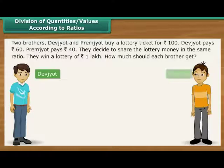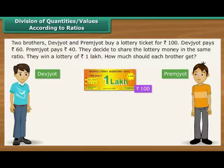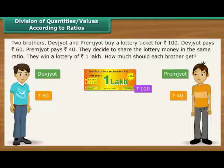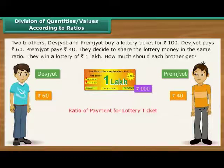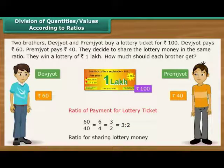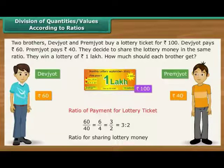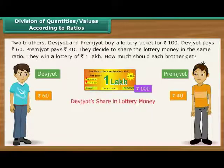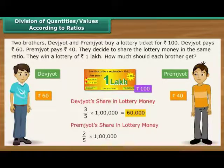Two brothers, Devjodh and Premjodh, buy a lottery ticket for Rs. 100. Devjodh pays Rs. 60 and Premjodh pays Rs. 40. They decide to share the lottery money in the same ratio. They win a lottery of Rs. 1 lakh. The ratio of their payments is 3 is to 2. It means that out of every Rs. 5, Rs. 3 will go to Devjodh and Rs. 2 will go to Premjodh. Devjodh's share is Rs. 60,000 and Premjodh's share is Rs. 40,000.